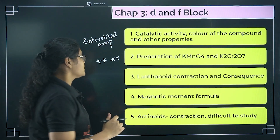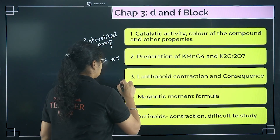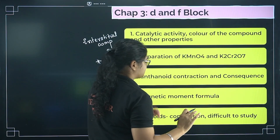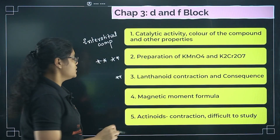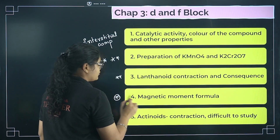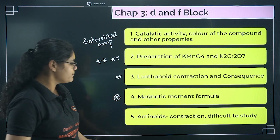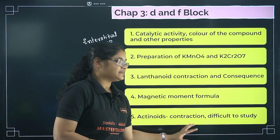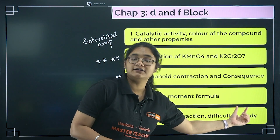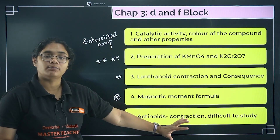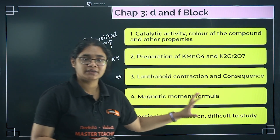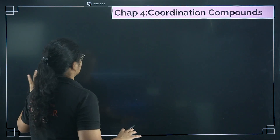Lanthanide contraction is super important — know at least two to three of its consequences. Also learn what magnetic moment is and how to calculate it using the formula. For actinoids, know what actinoid contraction is and why it is difficult to study actinoids.